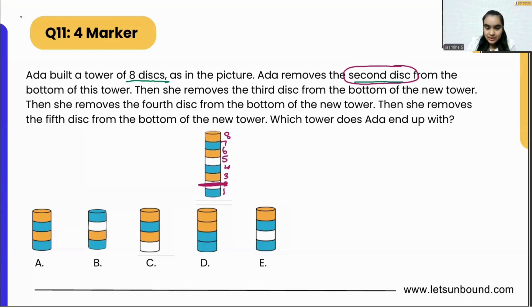This disc has been removed. Now the numbers have changed, right? The first one will stay as it is. Three will become two, four will become three, and it will change entirely. So this will become two, three, four, five, six, and seven. Now we have seven discs.